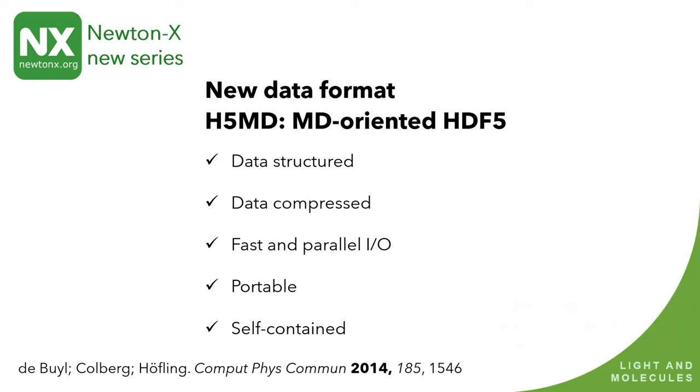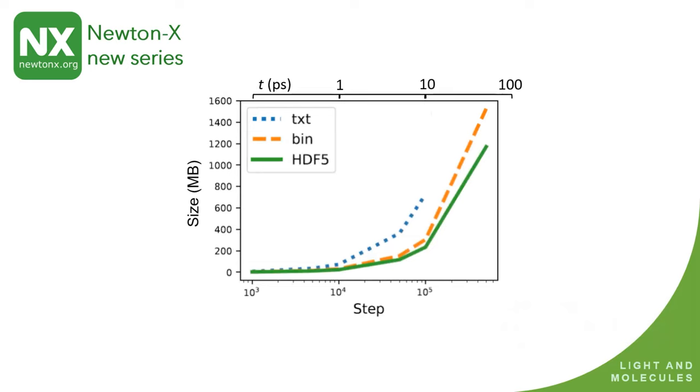Here, it's an extreme case because it's an analytical model that's integrated inside the binary. If you call external programs, the gain is not so much. But anyway, you have a lot of gain. We moved to H5MD format. That's one type of HDF5. It's a data structure, compressed, very fast, portable, and self-contained way of writing data.